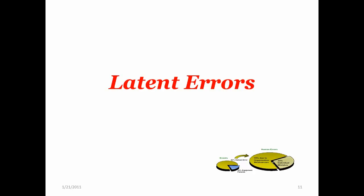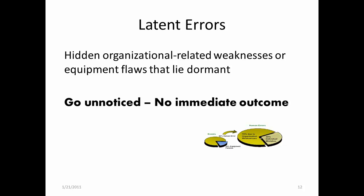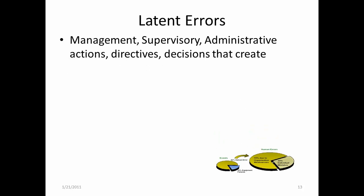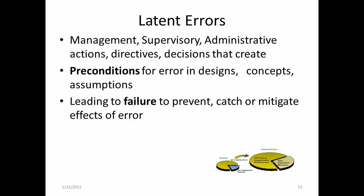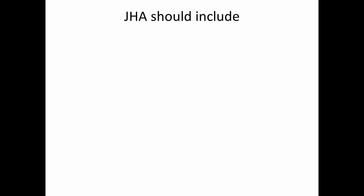So what are latent errors? These are hidden organizational-related weaknesses or equipment flaws that may have lain dormant and gone unnoticed as they have no immediate outcome or negative impact. Latent errors can go for long periods of time before they create a loss-producing situation. These latent errors include various management, supervisory, engineering, and administrative actions, directives, or decisions that have the potential for creating the preconditions for error, or that fail to prevent, catch, or mitigate the effects of an error.